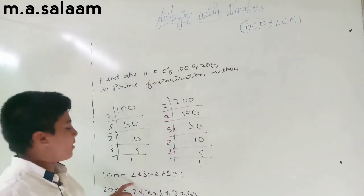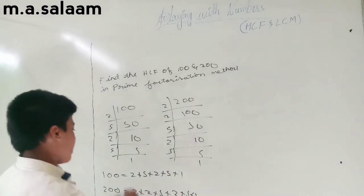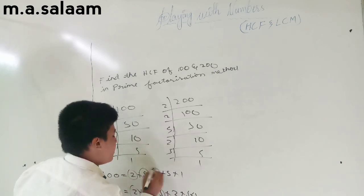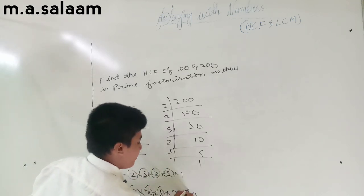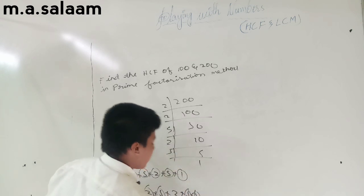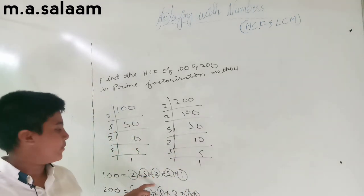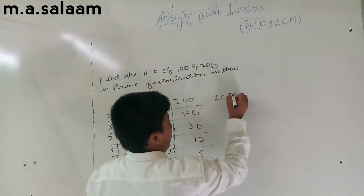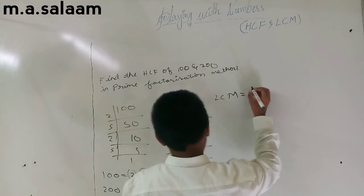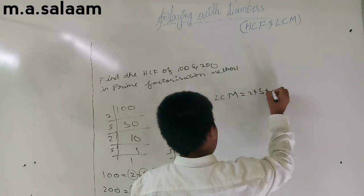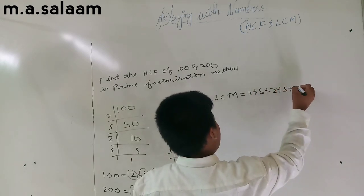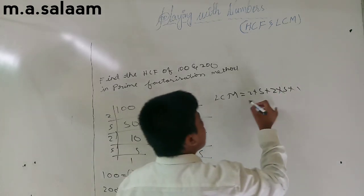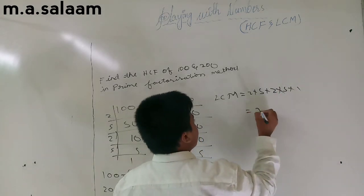We have to round up the numbers which are common to both. The common factors are 2, 5, 2, and 5. Now we multiply the rounded numbers: HCF equals 2 × 5 × 2 × 5 × 1. If we multiply these numbers we get the answer 100.